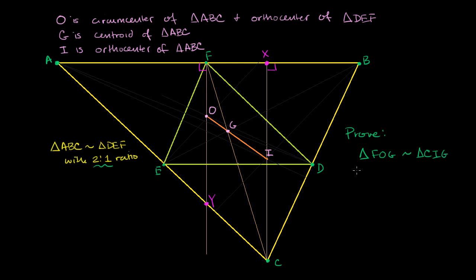If I can prove that triangle FOG is similar to triangle CIG, then their corresponding angles will be equal. That means angle FOG equals angle CIG, so OI would be a transversal cutting two parallel lines. These two angles would actually be vertical angles, confirming that O, G, and I all lie on the same line.